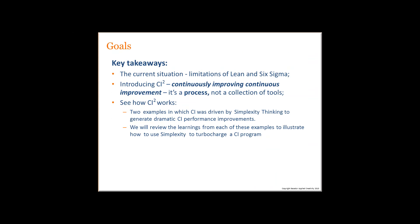The takeaways for today: looking at the current situation, there are limitations to Lean and Six Sigma, even though those are great things. We'd like to introduce CI squared, as Bob said. Key point — this is a process and not a collection of tools. Tools fit the process, but they don't drive the process.